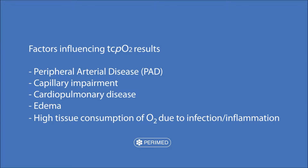For correct clinical diagnosis, it's important to fully understand your TCPO2 results. Peripheral arterial disease or capillary impairment will both yield low TCPO2 values. However, so will cardiopulmonary disease, edema, infection, or inflammation.